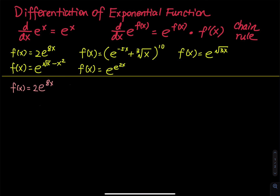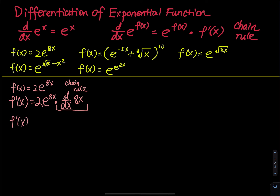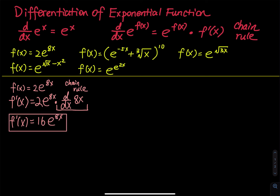Let's do several examples. The first one is f(x) = 2·e^(ax). The derivative f′(x): you write the whole thing — 2·e^(ax) — and then multiply by the derivative of ax, because we have the linear function ax inside the exponential. By the chain rule, the derivative of ax is a, so overall f′(x) = 2a·e^(ax). With a little practice you don't need to show the intermediate step anymore.